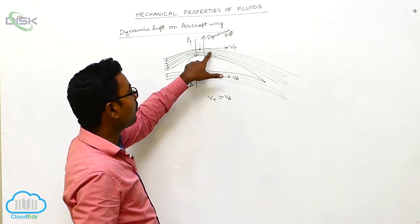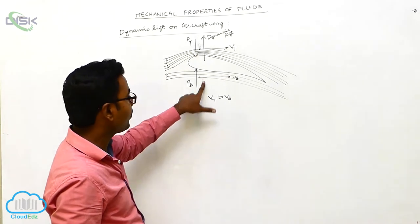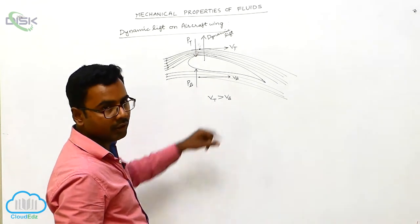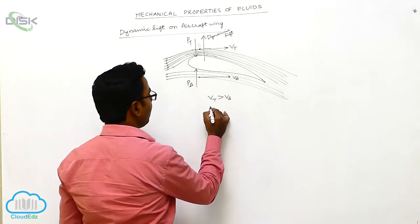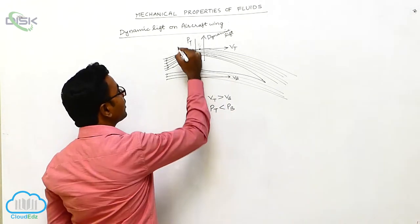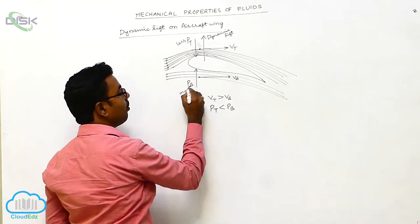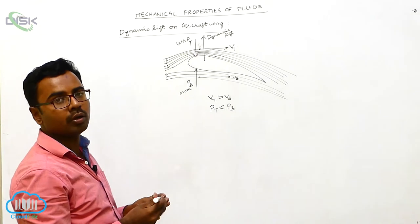If vt is greater than vb, according to Bernoulli's theorem, pt is less than pb. This means less pressure acts on the top of the aircraft wing and more pressure acts on the bottom of the aircraft wing. Due to this pressure difference...